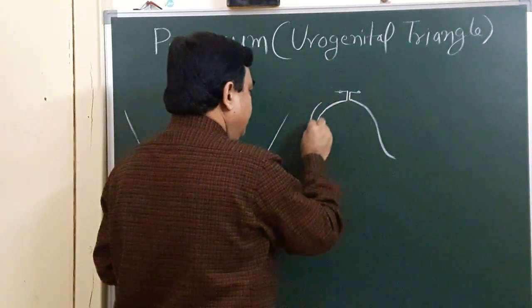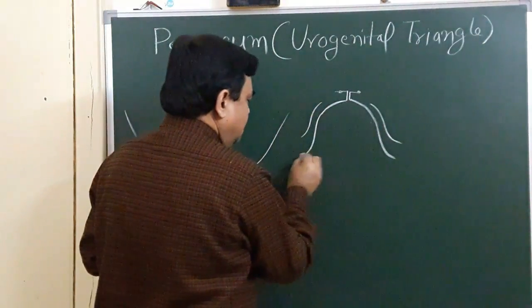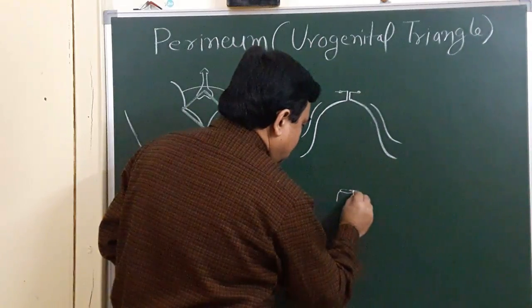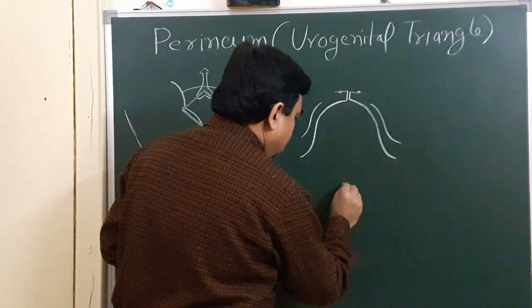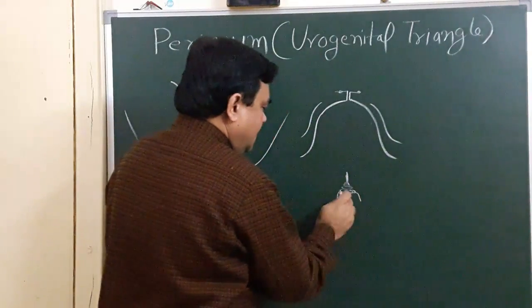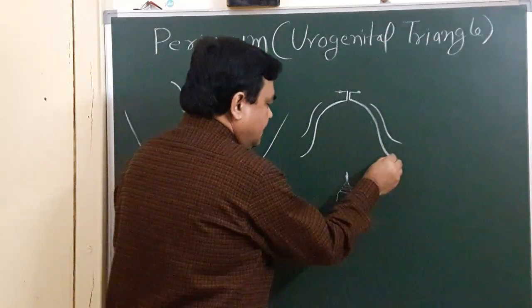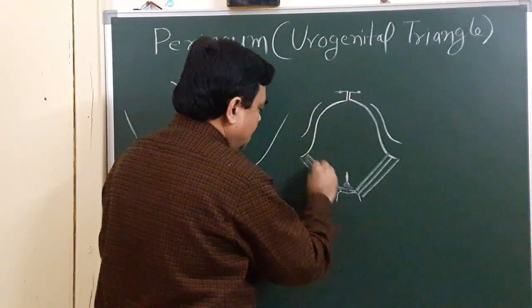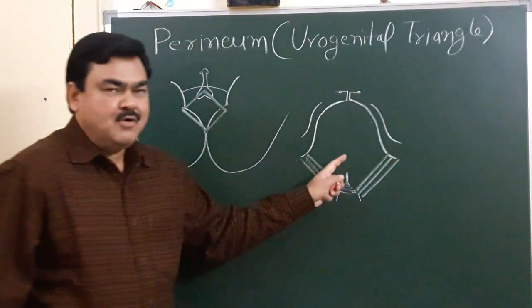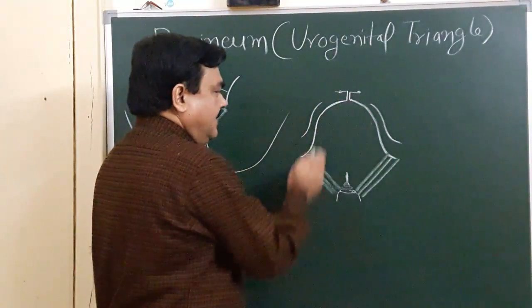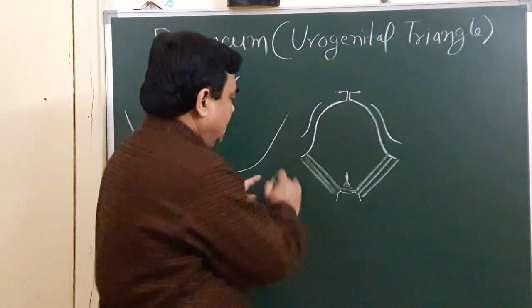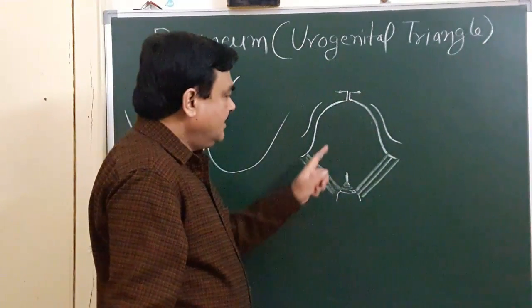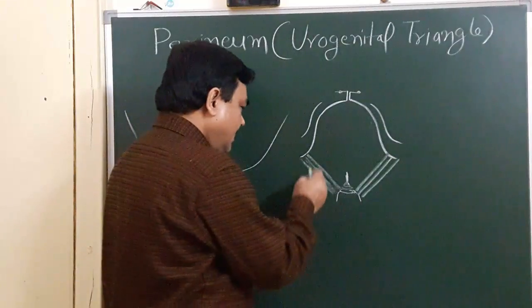Here is the ischiopubic ramus, here is the ischial tuberosity, here is the sacrum and coccyx, and here is the sacrotuberous ligament. This is the deep boundary of the perineum: the pubic arch, ischiopubic ramus, ischial tuberosity, sacrotuberous ligament, and posteriorly sacrum and coccyx. This perineum region is divided by a horizontal line passing anterior to the ischial tuberosity.